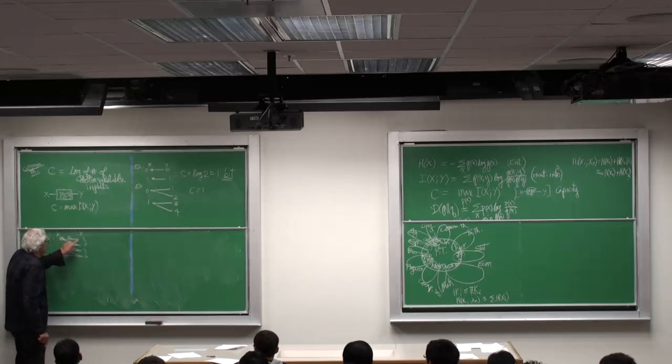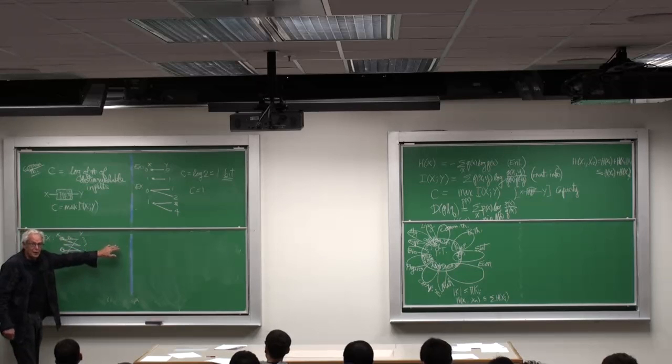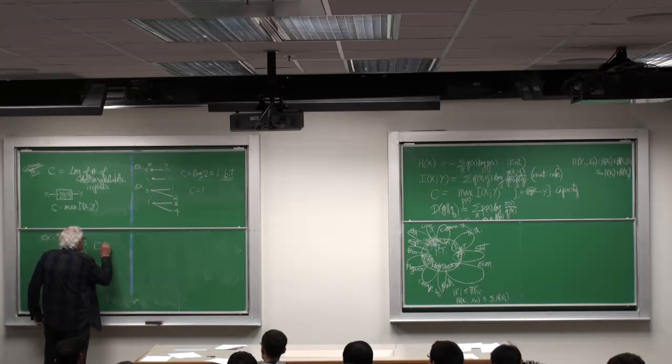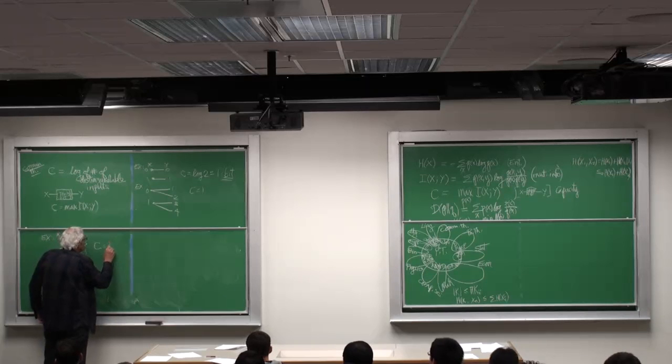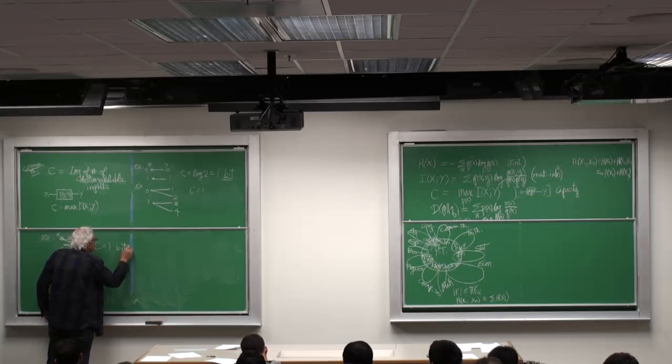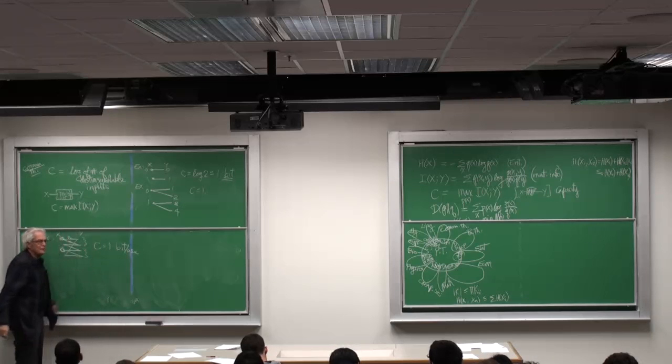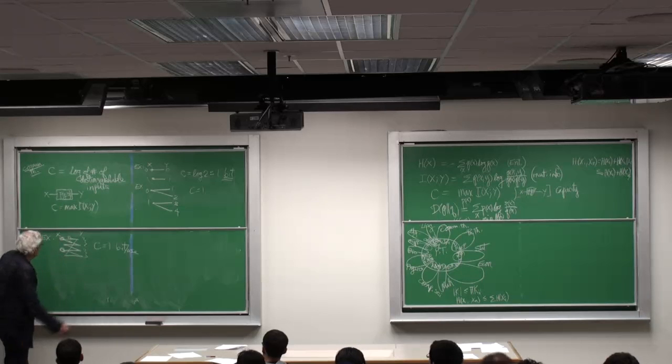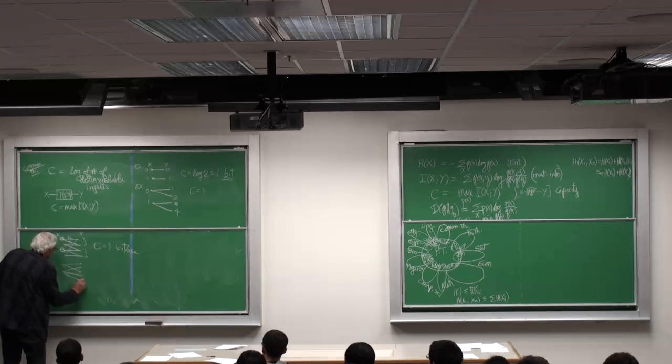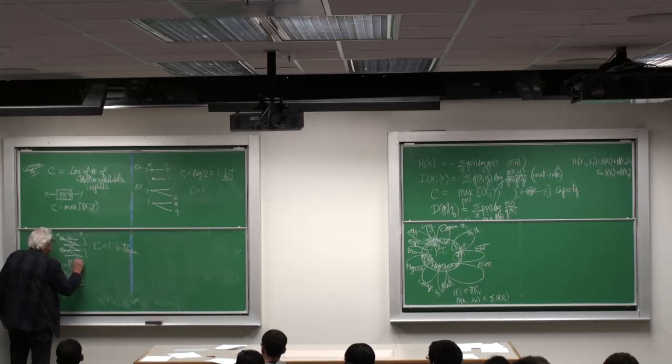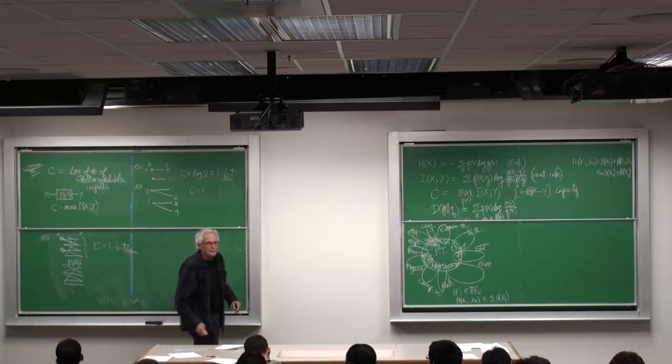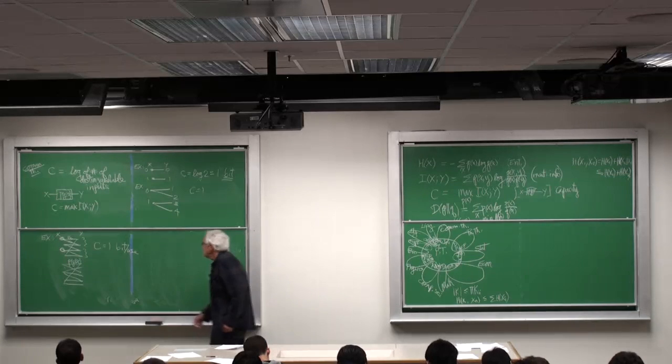Now, this is totally noisy, and now you have to actually go through the calculation. And you can find that C, which is at least one bit, is no more than one bit per use. That's the number of distinguishable inputs. Now, the beauty of the theory is even if I gave you something very strange, P of Y given X, you can calculate C, the number of distinguishable inputs. Now you might think, what about this?